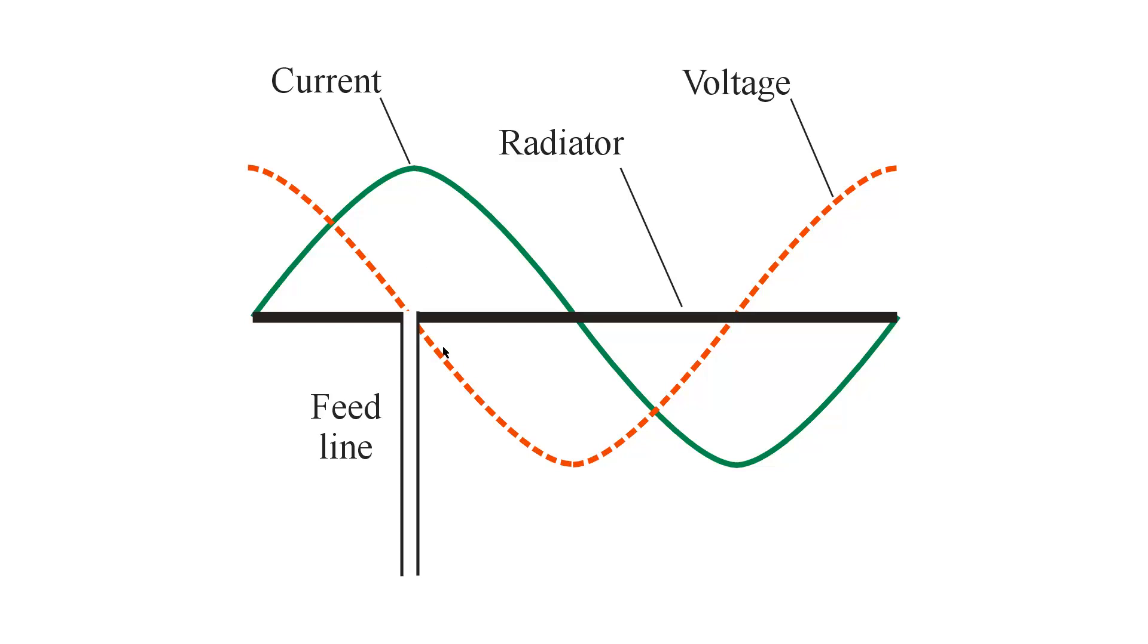You might suppose that we could place the feed line at this current loop instead of this one and still have current feed. And if you so supposed, you would be absolutely right.